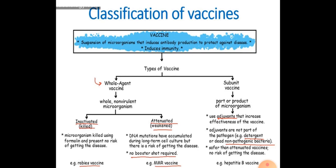Yeh attenuated se safe hoti hain kyunki is mein woh part liya jata hai microorganism ka jis se body ko harm na ho. Is mein disease hone ka chance bilkul nahi hota. For example, hepatitis ki baat karayin — hepatitis that is an example of this vaccine type.